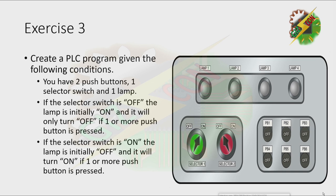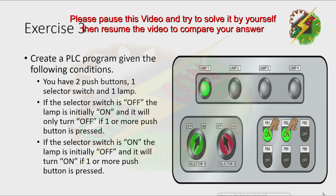With the selector switch on, the lamp is initially off. When I press push button 1, the lamp turns on. When I press push button 2, the lamp turns on also. When I press both push buttons, the lamp turns on as well. Now I want you to pause this video and try to solve it yourself, then resume to reveal the answer.